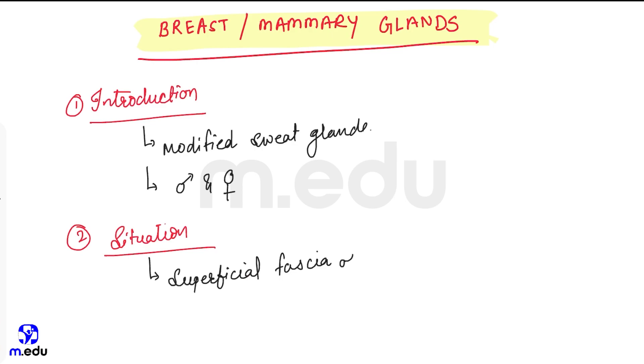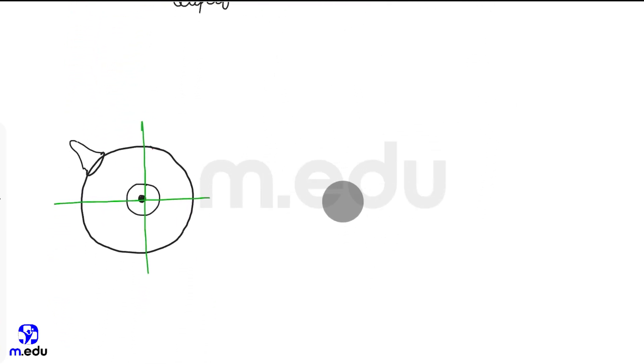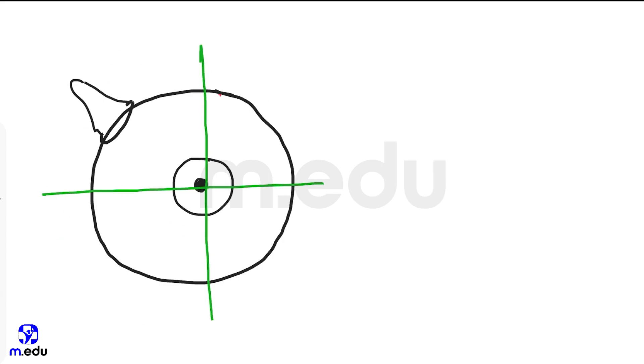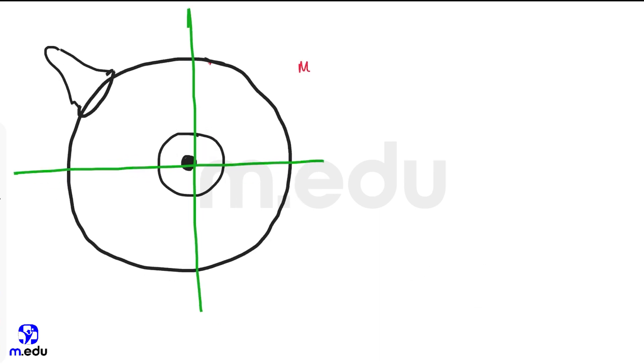It is divided into four quadrants. The breast, mammary glands, is divided into four quadrants. This is medial side, this is lateral side. So this is upper medial quadrant, this is lower medial quadrant, this is lower lateral quadrant, and this is upper lateral quadrant.